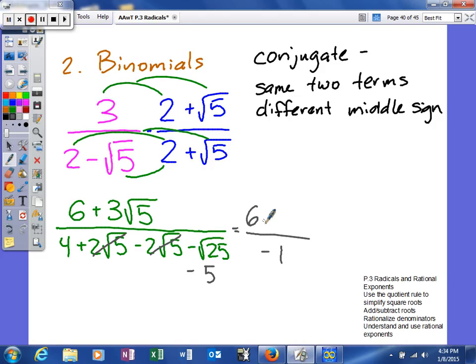Our numerator, there's not a whole lot we can do to simplify, so it's going to stay the same. And then most of the time, your textbook will not leave that as your answer. It will actually take this negative 1 and divide it into both of those. So we will get negative 6 minus 3 square root of 5. So that's your answer. We're going to look at one more example.